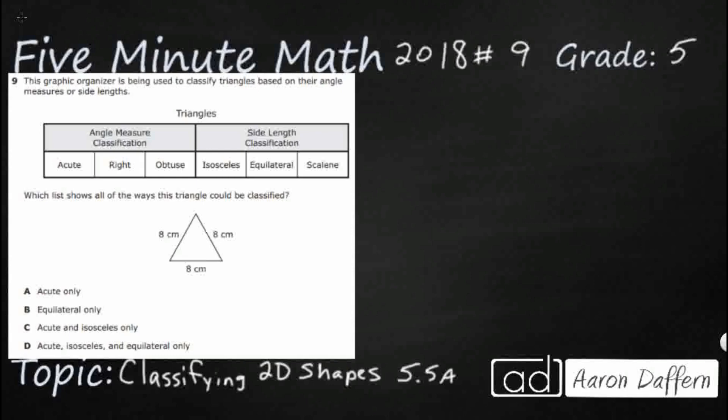So we have a triangle right here and it looks like it's got three different sides each of eight centimeters and we need to classify it. You notice there's two different ways that we can classify it: by its angle measure and by its side length. Every single triangle that you ever can draw can always be described at least two different ways.